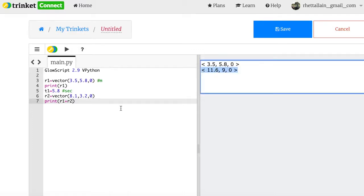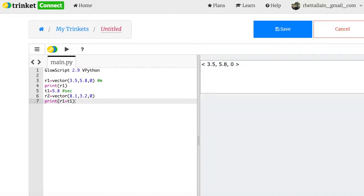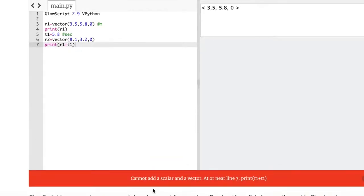So it did exactly what I want. So you can treat that now just as a, just to show you what something you can't do: r1 plus t1. Why would I want to do that? I don't know, but if I do that, see if I scroll down here it says cannot add a scalar and a vector. Exactly, so it won't let me do things you can't do. So that's cool.